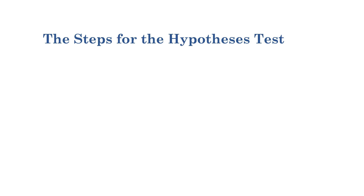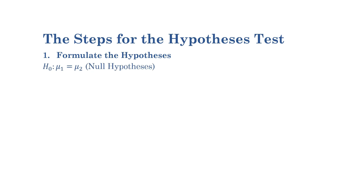Number one: formulate the hypothesis. This involves defining a null hypothesis and an alternative hypothesis. The null hypothesis usually represents the status quo — the hypothesis that there is no effect or no difference — while the alternative hypothesis represents the opposite.